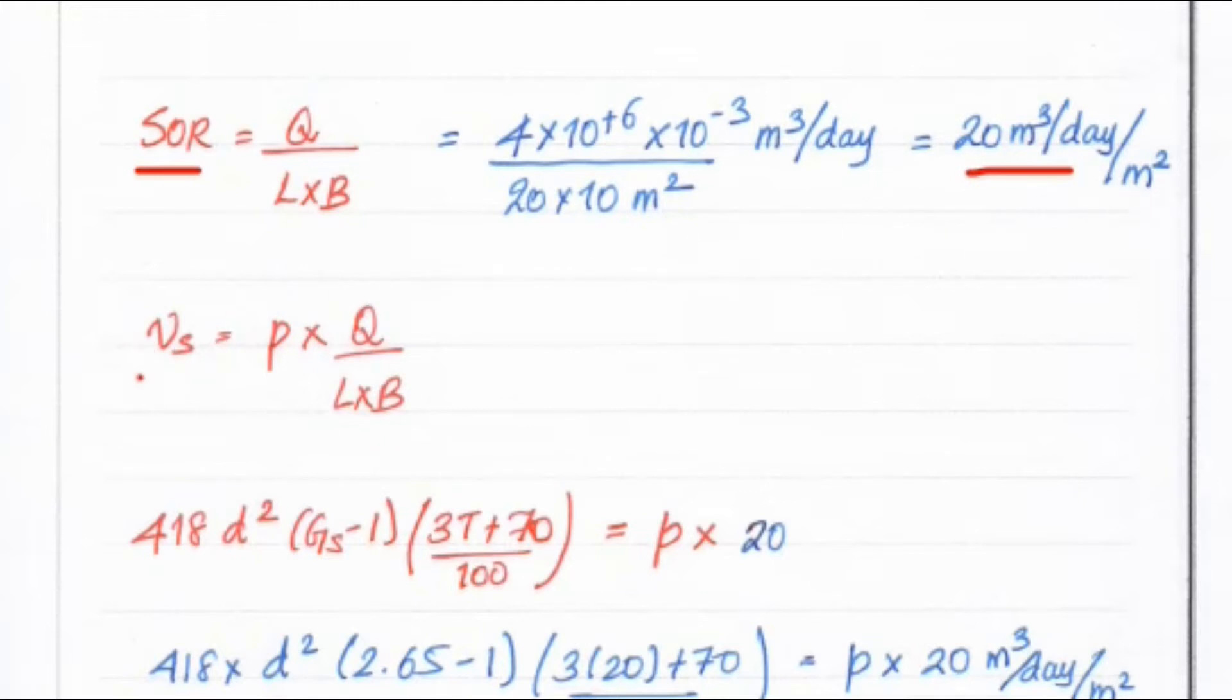Now we know the settling velocity formula V is equal to P into Q divided by L into B. So Q divided by L into B we find out is 20 meter cube per day per meter square.